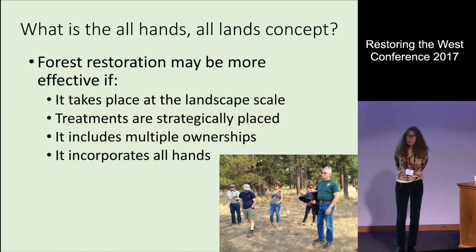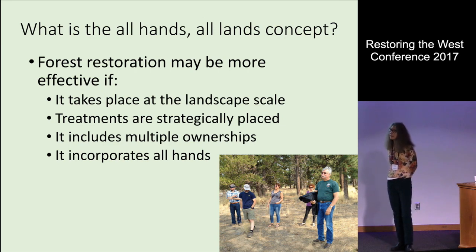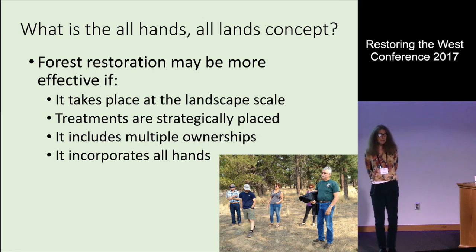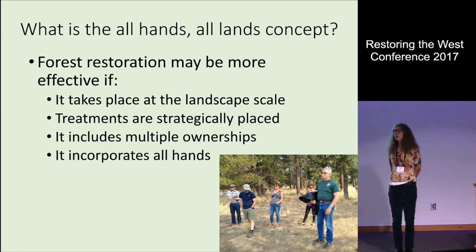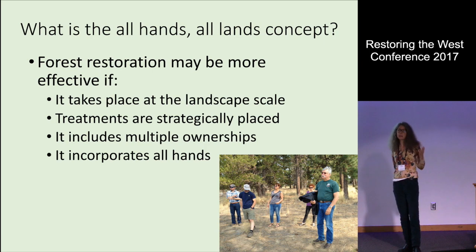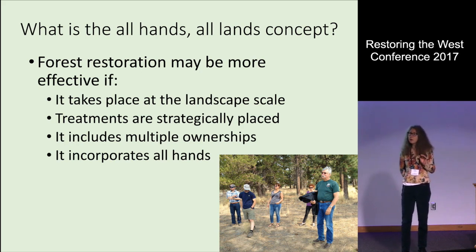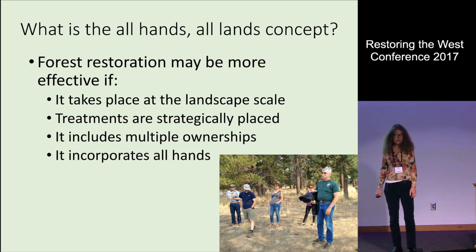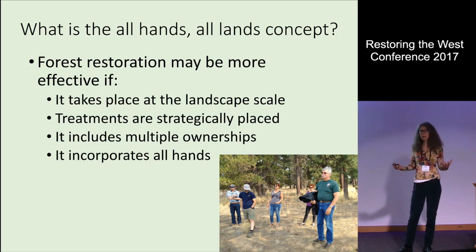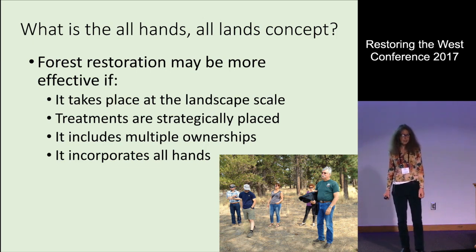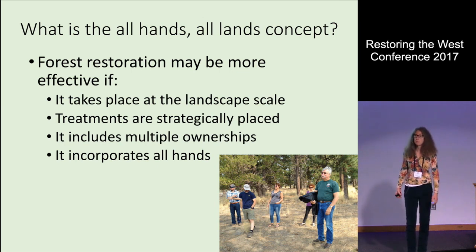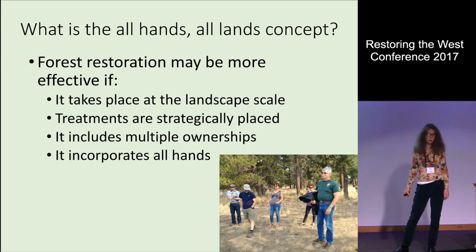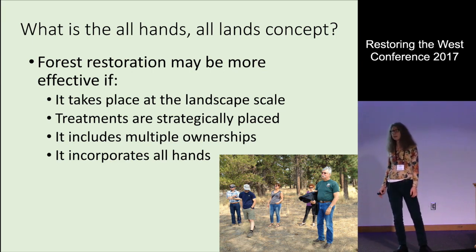It usually means that we try to strategically place restoration treatments across the landscape. We don't have to go out and restore everything. What we want to do is identify the places most in need of restoration and that can be most effective — for example, at addressing the way that fire moves across the landscape. That can often mean placing those treatments strategically across land ownership boundaries, because our landscapes are typically multi-jurisdictional in the western United States.